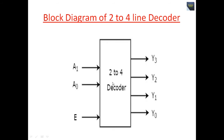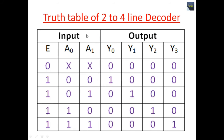In the block diagram of the 2-to-4 line decoder, the two inputs are A0 and A1, and the four outputs are Y0, Y1, Y2, and Y3, with one enable input E. One of these four outputs will be 1 for each combination of inputs when enable E is 1. This is the truth table of the 2-to-4 line decoder.